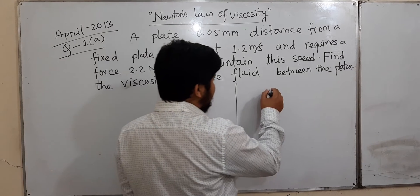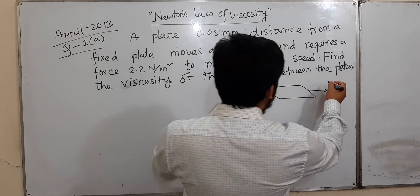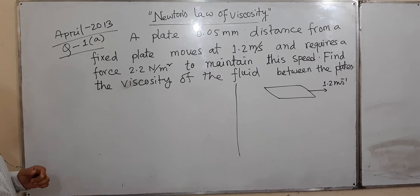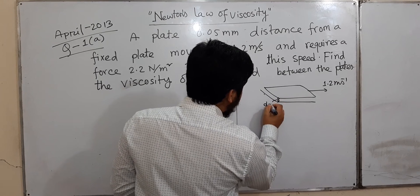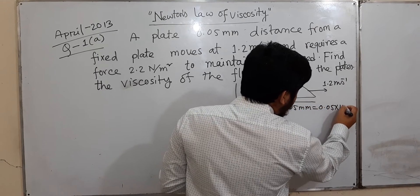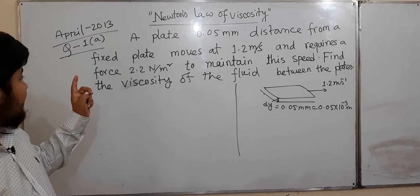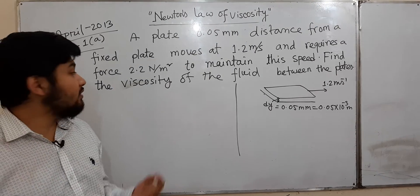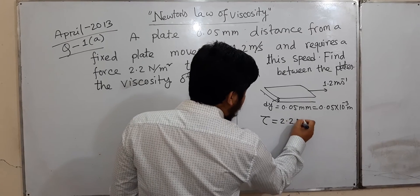This is a plate and this is a fixed plate. At a constant speed of 1.2 m per second, the distance between the fixed plate and the moving plate, dy, is 0.05 mm, which is 0.05 × 10⁻³ meters. The force required to maintain this speed is 2.2 Newton per meter square.